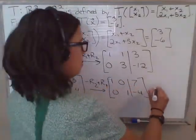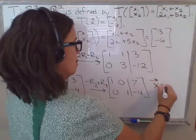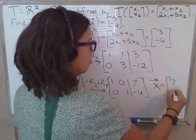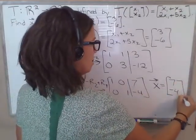And so the vector x that we're looking for in this case is the vector x1 equals 7, x2 equals negative 4. So 7, negative 4.